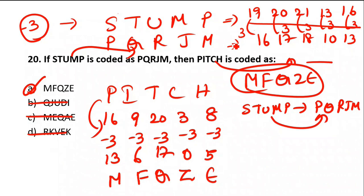Why minus 3? From S coded as P: S is 19, coded as 16. If 19 is coded as 16, you are going in the backward direction in alphabetical order. Backward direction by three places is minus 3. If you go forward direction, that is plus 3.